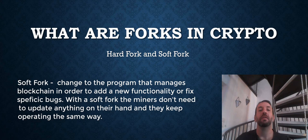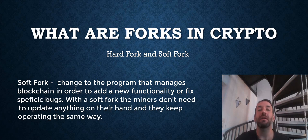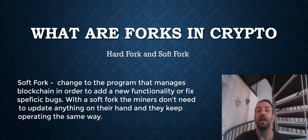In a soft fork, there is simply an update — a change to the program that manages the blockchain in order to add new functionality or fix specific bugs. With a soft fork, the miners don't need to update anything on their end and they keep operating the same way. Another important thing is that with a soft fork, despite the split, only one blockchain will remain valid for users.